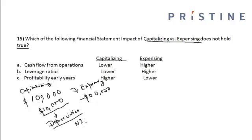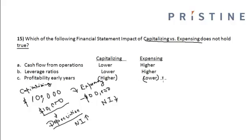So my net income will be on the higher side under capitalization, whereas in expensing my net income will be on the lower side. Looking at option 3: profitability in early years is higher for capitalization and lower for expensing — this option is correct.